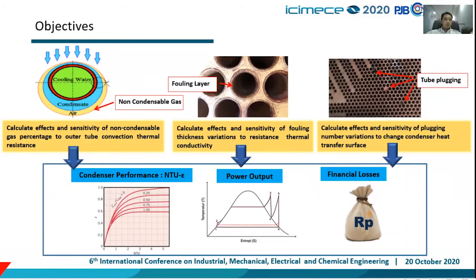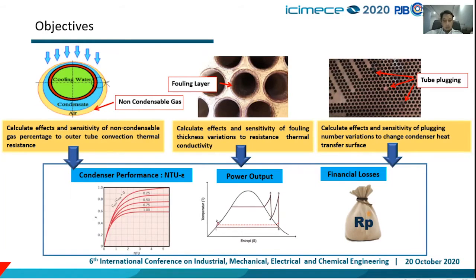The objective of this paper is to compare variations in the percentage of non-condensable gas, fouling thickness, and amount of plugging, so that we can find out how significant and how sensitive the effect of these variations on condenser performance, power output, and financial losses. The NTU-effectiveness method is a method to determine the effectiveness of a heat exchanger in transferring a certain amount of heat.